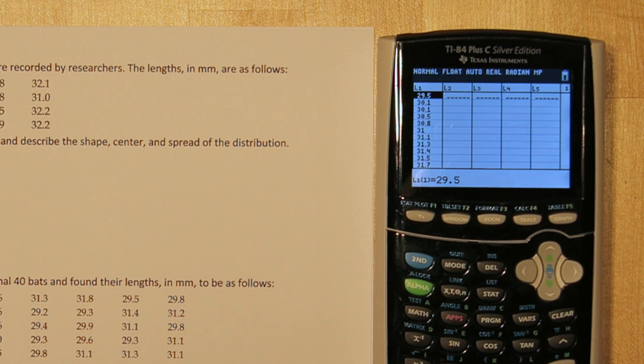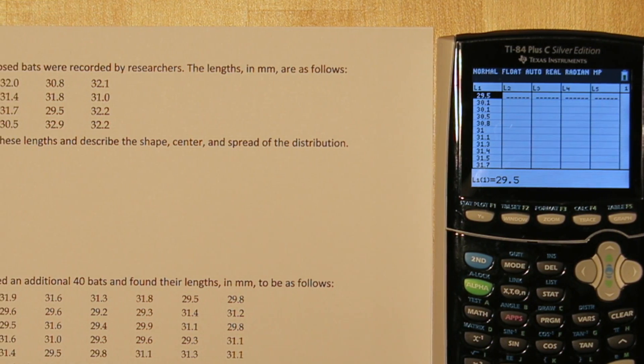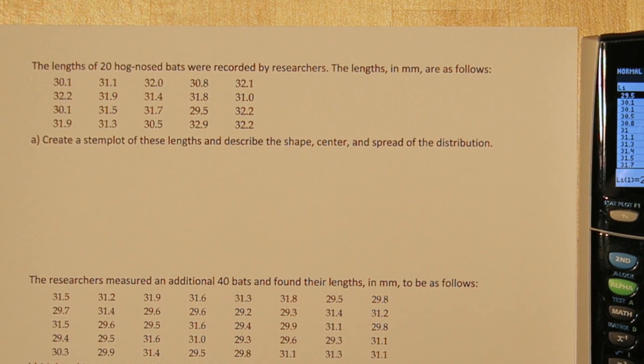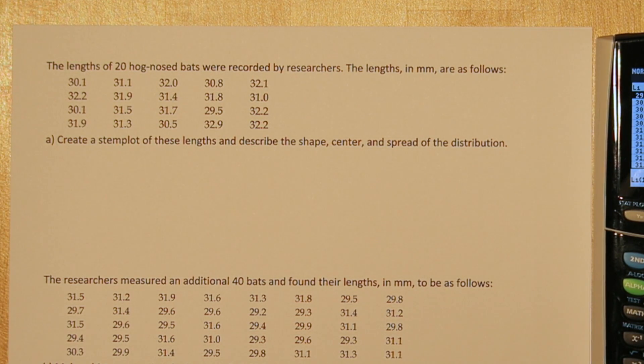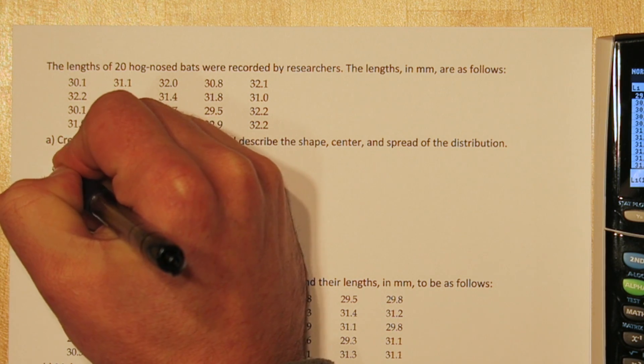Now I'm ready to make my stem plot. Stem plots have two parts, a stem and a leaf. We need to decide what we're going to use for our stems. If we just use integers, it looks like the only stems we'll have are 29, 30, 31, and 32. That might be a little too condensed. So one thing we can do is we can split each integer into the lower half and upper half of its values. Here's what I mean.